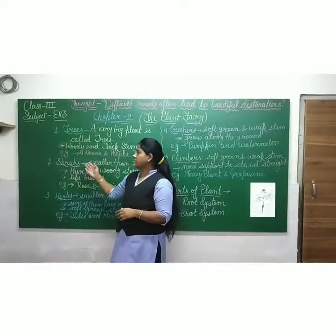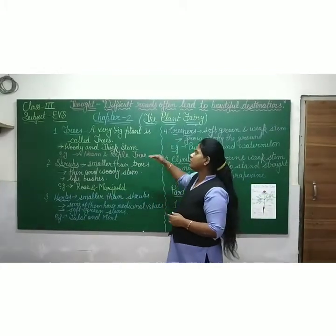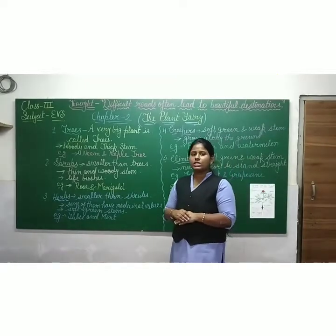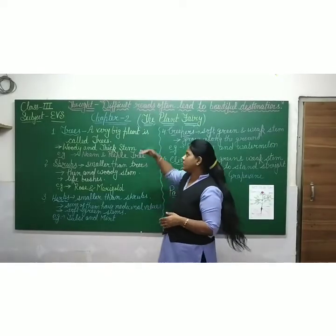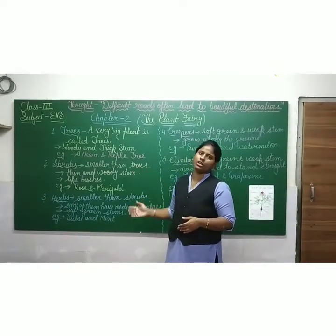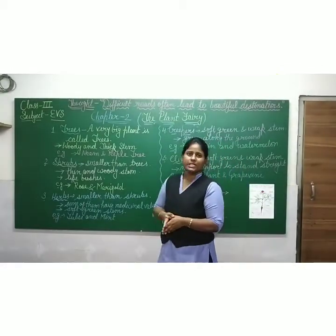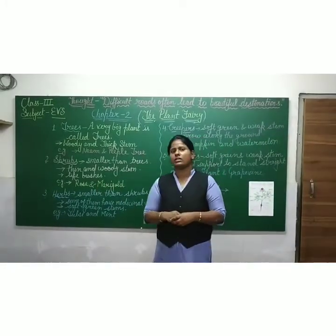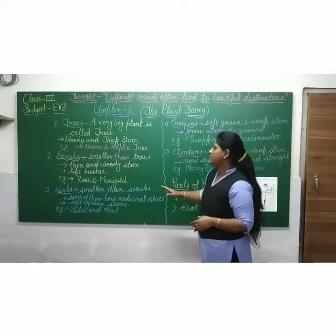Next is shrubs. Shrubs are smaller than trees. They have a thin stem and are like bushes. They also have many branches. For example: rose, marigold, jasmine, and sunflower. These are all shrubs.